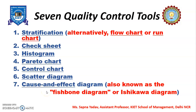Hello students, today we are going to discuss unit 5th topic 7 quality control tools. These quality control tools help in identifying the problem so that a solution will definitely come. As we all know, half of our problem will be solved when we know the reasons. These quality control tools are not only applicable in the manufacturing sector but also applicable in different sectors.